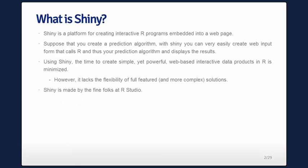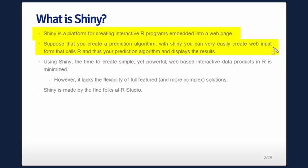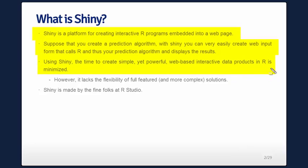So what is Shiny? Shiny is a platform for creating interactive R programs in a web page. Let's give an example. Your boss comes in and you've created a prediction algorithm, and they want you to put it up in a format so that lots of users can access it and they don't all have to come to you to get their predictions. They want to be able to point and click, but you want to be able to do it quickly without involving legitimate web development. Using Shiny, the time to create simple yet powerful web-based interactive data products in R is minimized.